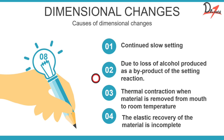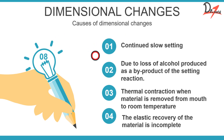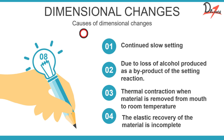The causes of dimensional change in condensation silicone include: continued slow setting even after it appears set; loss of the alcohol byproduct produced during the setting reaction; thermal contraction when the material is moved from the mouth to room temperature; and incomplete elastic recovery. Because of this dimensional instability, models should be poured as soon as possible after recording the impression. This is not true for addition silicone — addition silicone is very stable, can be poured even after a few days, and can also be re-poured.